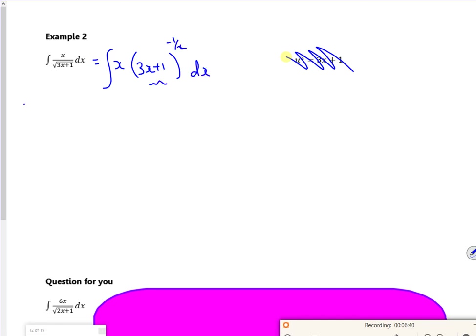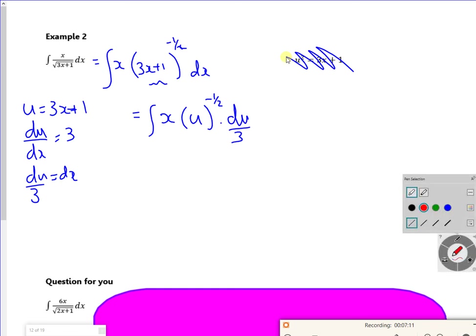But we tend to replace the bits in the bracket. So I'm going to replace that bit there. So u is 3x plus 1. So following the rule, differentiate it. Du/dx is 3. We arrange it for dx. So du over 3 is dx. So then I'm replacing with a u, and I'm replacing with a du. So I've got x. I've got u to the power minus half. And I've got du over 3. My problem now is I've still got the x.